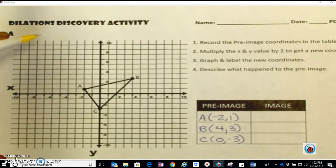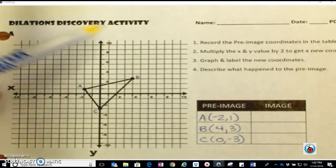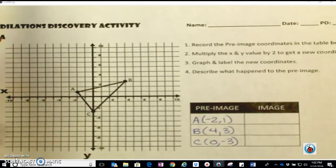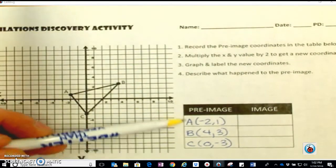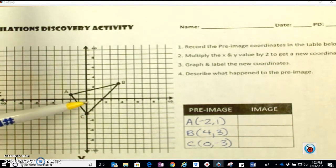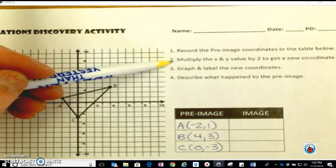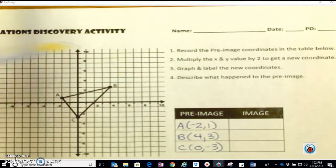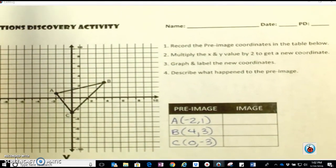Just to introduce what is a dilation, we took a look at some step-by-step. I've already gone ahead and recorded my coordinates from the given pre-image. Then it tells me to multiply the x and y value by 2 to get a new coordinate.